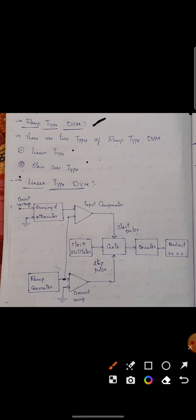If we observe the diagram here, there will be a ramp generator. The ramp generator produces the ramp signal and the value to be measured will be given as input voltage. This input voltage will be given to the ranging and attenuator circuit.